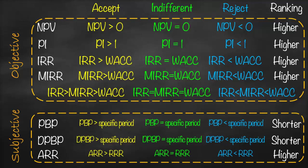For Payback Period, Discounted Payback Period, and Accounting Rate of Return, they are considered subjective measures. This means they don't have a fixed benchmark. I need to ask each investor how long they would like to get their money back or what required rate of return they expect — it differs from one investor to another, which is why they are subjective.